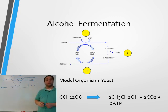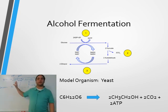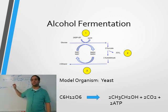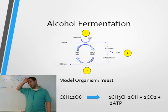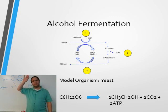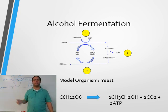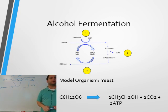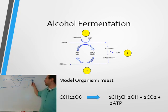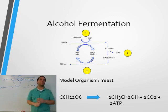E. coli has another pathway - it cuts something else off to create acetic acid. E. coli creates vinegar. It cuts something else off to make acetic acid.